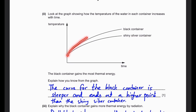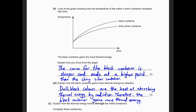Because both containers start at the same temperature and the black container ends at a higher point, we know the temperature increases more for the black container. This is because dull black colors are the best at absorbing thermal energy by radiation. That's why the black container gains more thermal energy than the shiny silver one.